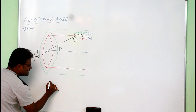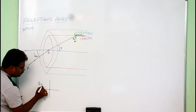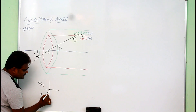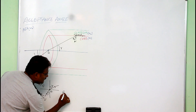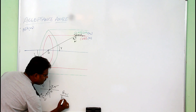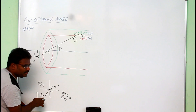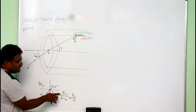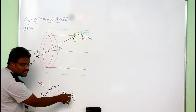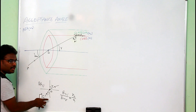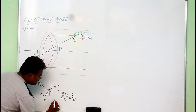Before going further, let us see how to write Snell's law at a particular point. Consider two mediums whose refractive indices are N1 and N2. Let us say this is angle of incidence i and this is angle of refraction R. Snell's law at point O: sine of angle of incidence by sine of angle of refraction equals the refractive index of the second medium with respect to the first medium, which is N2 by N1.